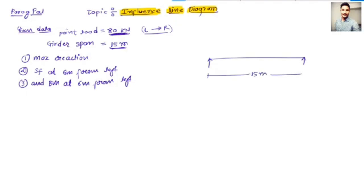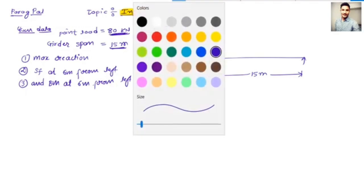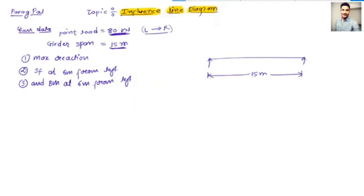Right now my load is at a certain point — 80 kilonewton — and it is moving from left to right. This is the left direction and this is the right direction. My load is moving from left to right, so my first condition is to determine the maximum reaction.